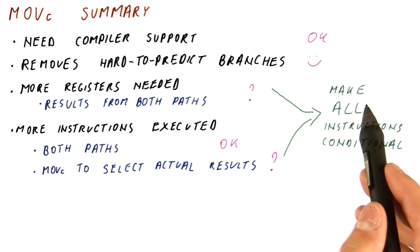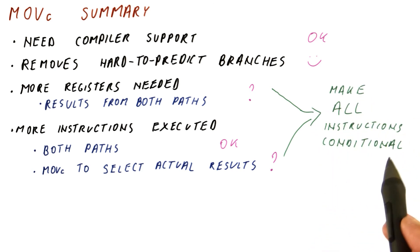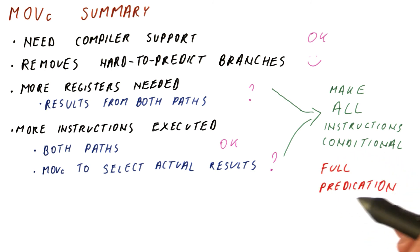Every instruction computes its result and then writes it or doesn't write it to the destination register, depending on whether a condition is true or not. This approach is called full predication, and it requires extensive support in the instruction set.